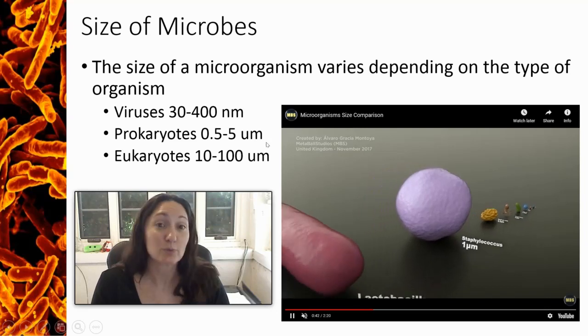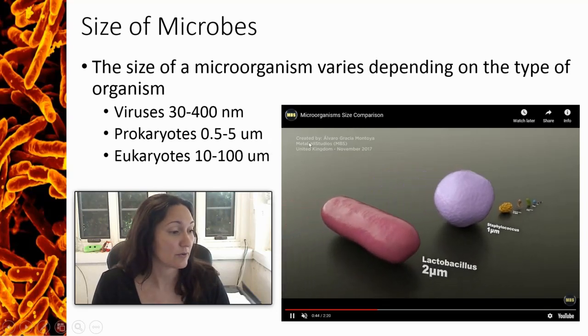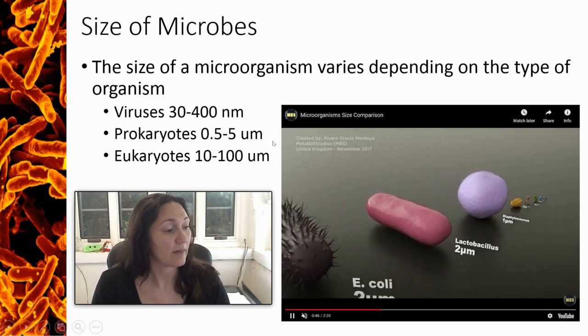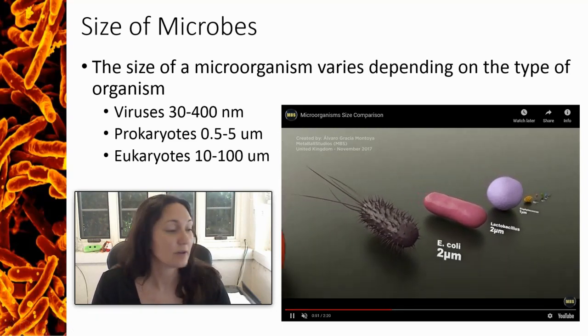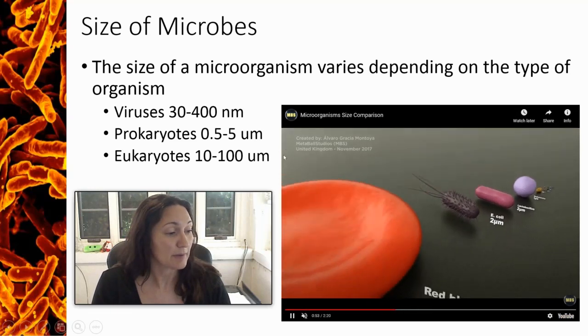Now we've jumped up in size, we're back to the prokaryotic range. We've got a staphylococcus, a lactobacillus, and an E. coli at about 2 micrometers in size. Now we're going to jump up again.